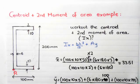For the following video we are given a C channel and we have to work out the centroid and the second moment of area Ix. This C channel has a 10 millimeter thickness on the flanges, over here and over here.